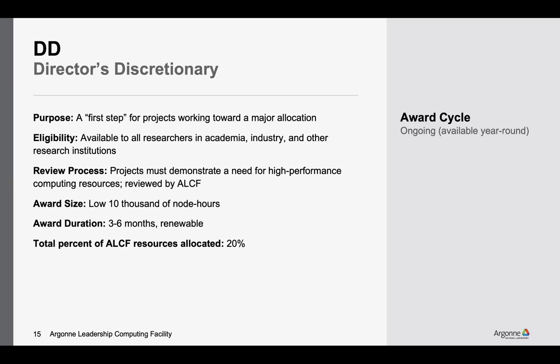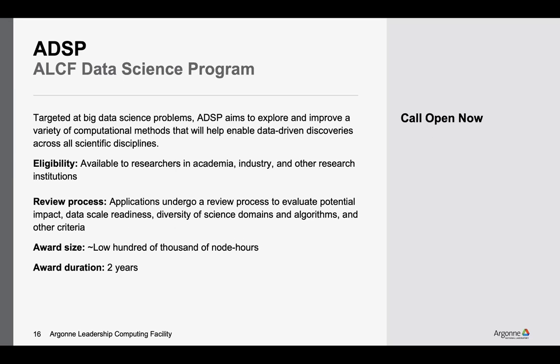What we tend to recommend is you start small. If you demonstrate need and come back showing you've used all your allocation and are working toward a proposal, we can give you more. But this is a program where we don't have strict requirements that you show up and get your work done — we're giving a lot of people a chance to get access. That's why we have regular touchpoints with projects that come in through discretionary.